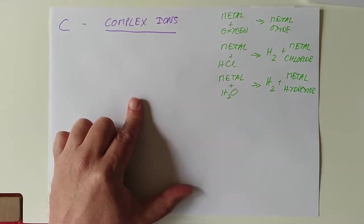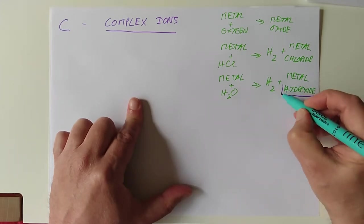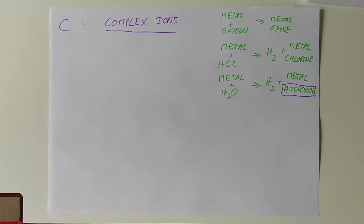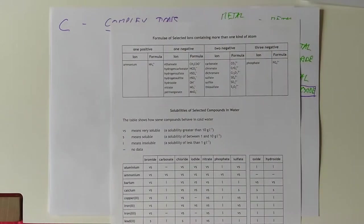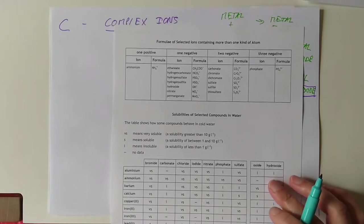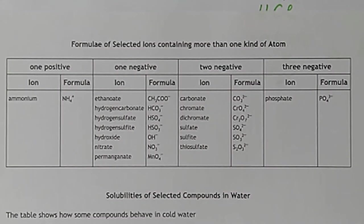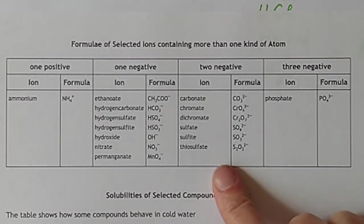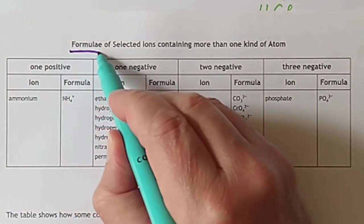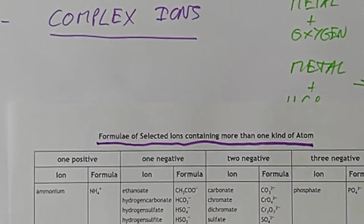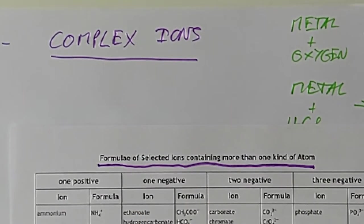The last one though. Metal plus water. That made hydrogen gas and that's fine. But I threw something at you called a metal hydroxide. Now this hydroxide, this is our complex ion that I would like to look at today. Now for this we need a page of our data booklet, which I have conveniently. Here's one I printed out earlier. We actually need page 8 of our data book. I'm tempted to zoom down on this. Let me see if I can get this working for us.